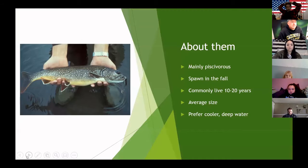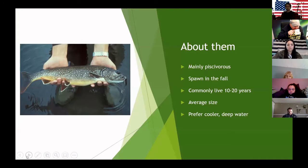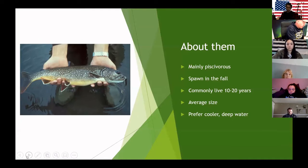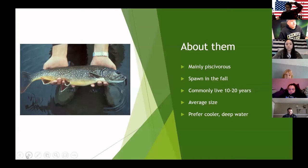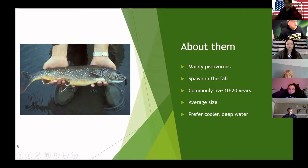They mainly eat other smaller fish, but they do eat other things when they can't have that or when they're younger. They mainly spawn in late summer or fall. It's not uncommon for them to live more than 25 years, and it's even been recorded of them living up to 60. They're often 24 to 36 inches in length, and the largest recorded one was 100 pounds. They spend most of their lives in cooler, deeper bodies of water.